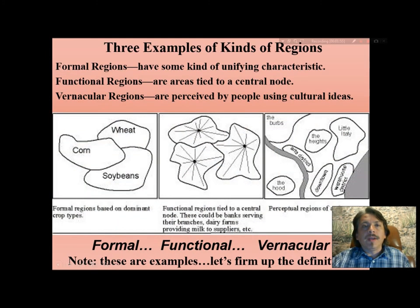Here we have three examples or kinds of regions: the formal region, the functional region, and the vernacular region.